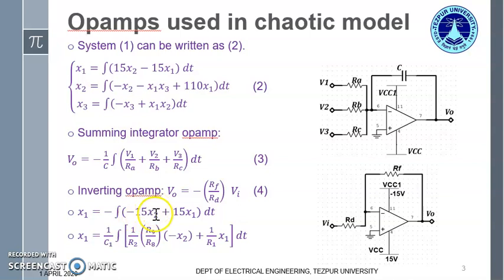The coefficients 15 for x2 and 15 for x1 can be represented in circuit by equivalent resistance values. So correspondingly we can write the equation as x1 equals 1 by C1 for the integration part. Then 1 by R2 corresponding to 15. R9 by R8 is due to the negative sign that is the equation of the inverting op-amp minus x2 plus 1 by R1 is the equivalent resistance of 15 into x1.